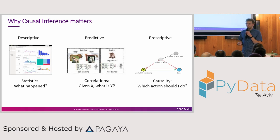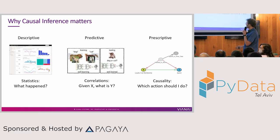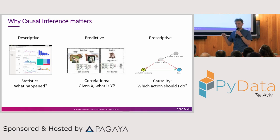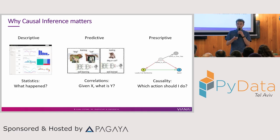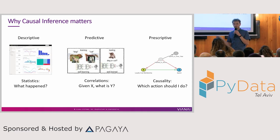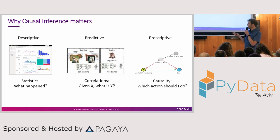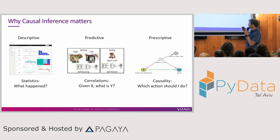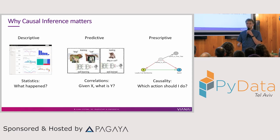What we're seeing now in the data science community is that we're moving towards prescriptive analytics. The idea is that we're not just looking at correlations — we're actually going to look at the system, how a system behaves, which events and actions cause other events and actions. Using causal inference, we can answer a different question. We're not asking, given this information, what is the other information? We're asking: which action should I take? What should I do differently from what I'm doing now to get a better result?